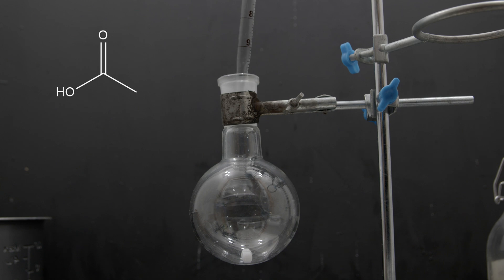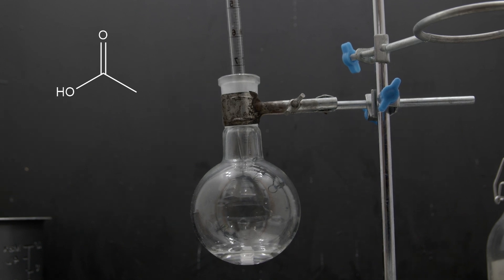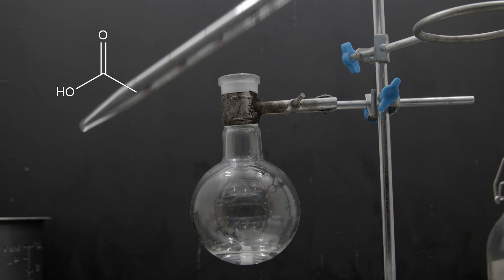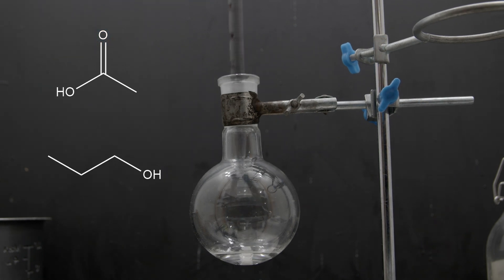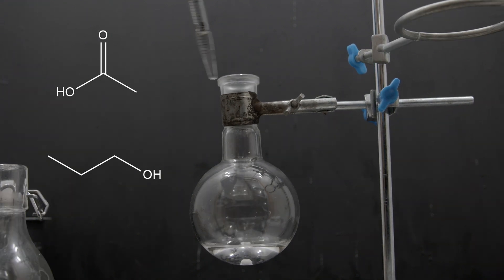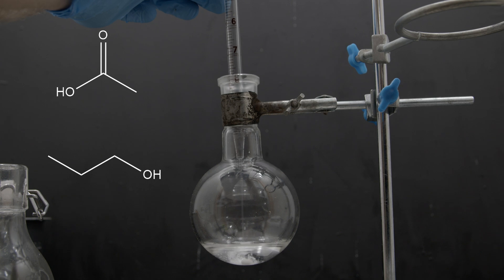So to a round bottom flask, we slowly add 10 milliliters of glacial acetic acid that we extracted from vinegar, and then we followed up with 12 milliliters of propanol. This I bought as a hand sanitizer additive, and we finish it off with a nice little dash of sulfuric acid.